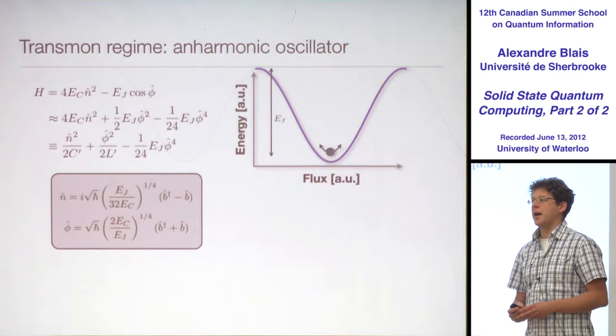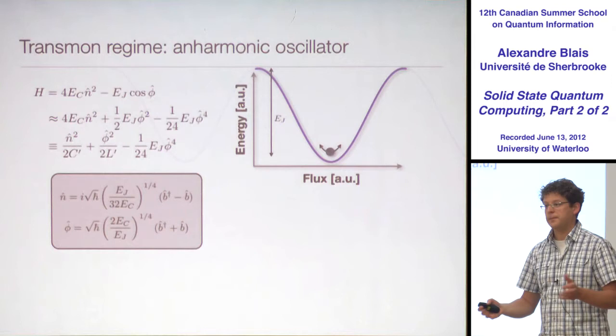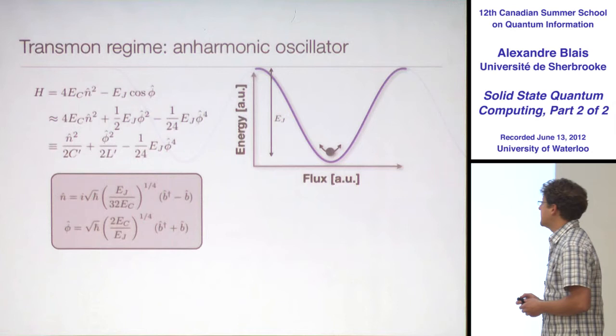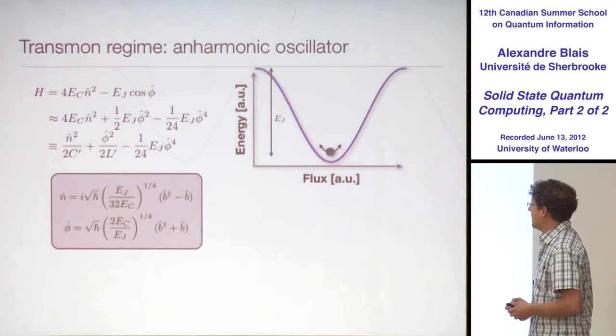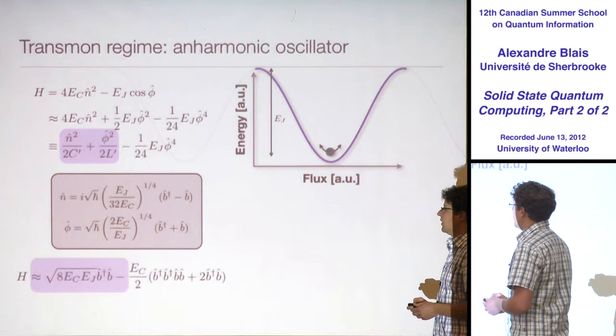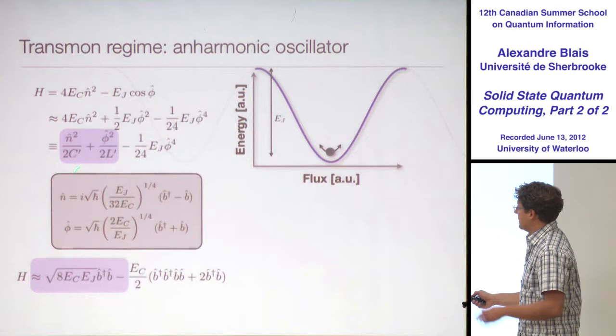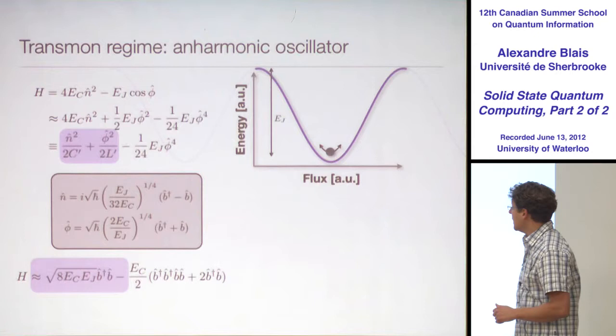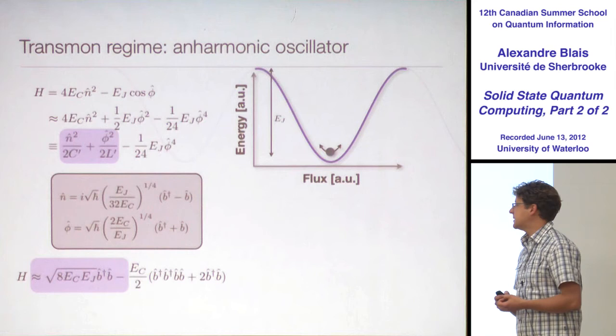So let's repeat this procedure for the first two terms of the transmon Hamiltonian. I introduce creation and annihilation operators — I'll call them B instead of A. Whenever it's a harmonic oscillator, I'll call it A; whenever it's a transmon, I'll call it B. I have the same pre-factors, which in terms of EC and EJ give this pre-factor.